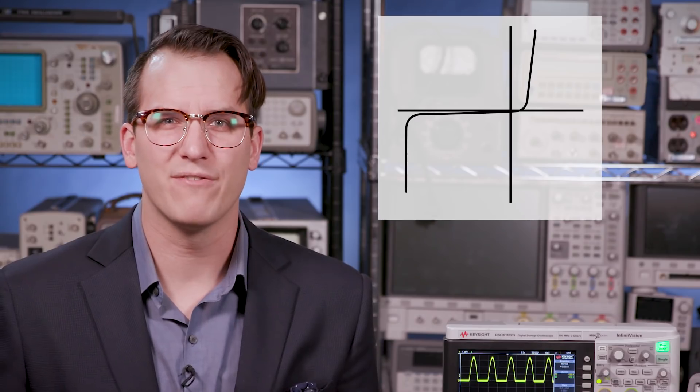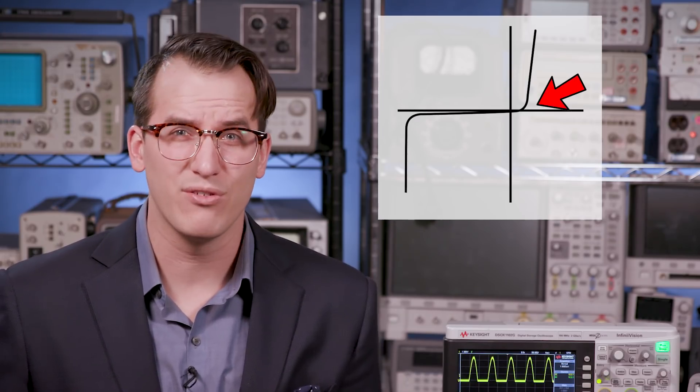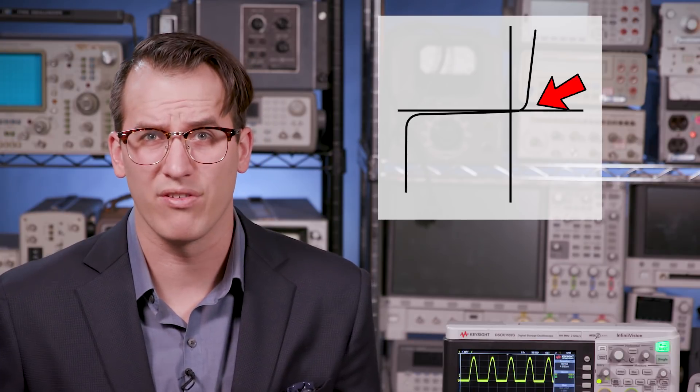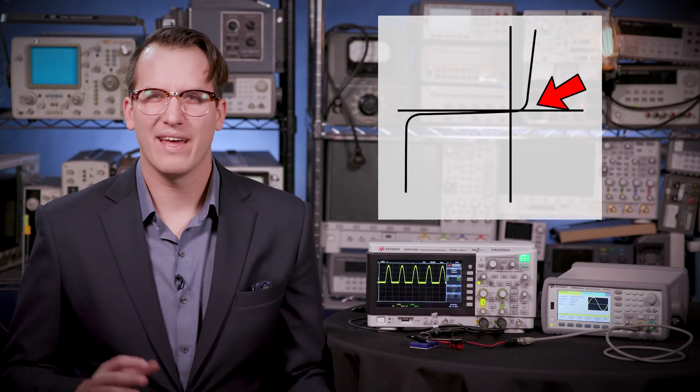At moderate positive voltages, a diode essentially acts as a short, but with a small voltage drop called the forward voltage drop. You can see the forward voltage drop on the VI curve, usually around 0.6 or 0.7 volts, and that's where the current starts to ramp up. That 0.6, 0.7 volt drop is standard for silicon diodes, but for other types of diodes and materials, this forward voltage drop may vary.